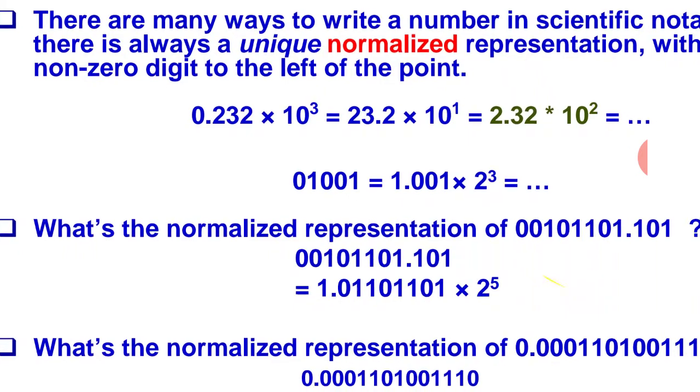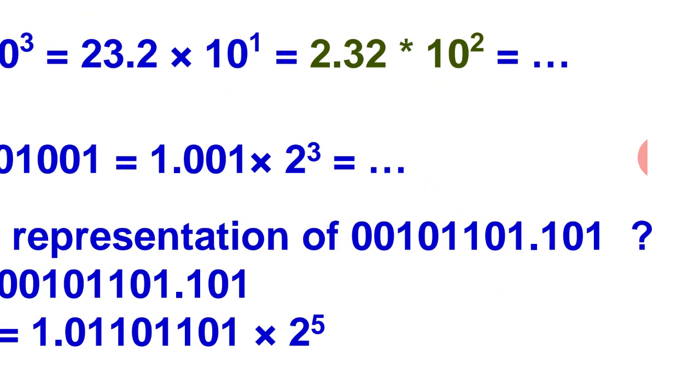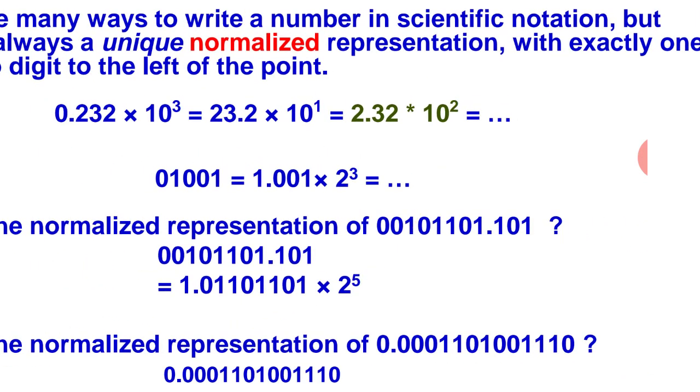Next one, what is the normalized representation of this? You see, here we have to move the point to the left side. The decimal point was before 3 digits, now we move it left. One, two, three, four, five positions we move left. Moving left means the power will be plus. Moving right means power will be minus. This is the same relation you use in decimal number system. If we move decimal point left, we get 2 to power plus value. If we move right, we get 2 to power minus value.